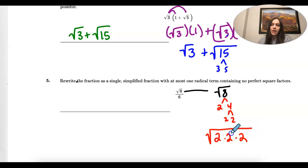And we're going to pull out a group of 2 to 1 time. And so I would have 2 times the leftover which is 2.